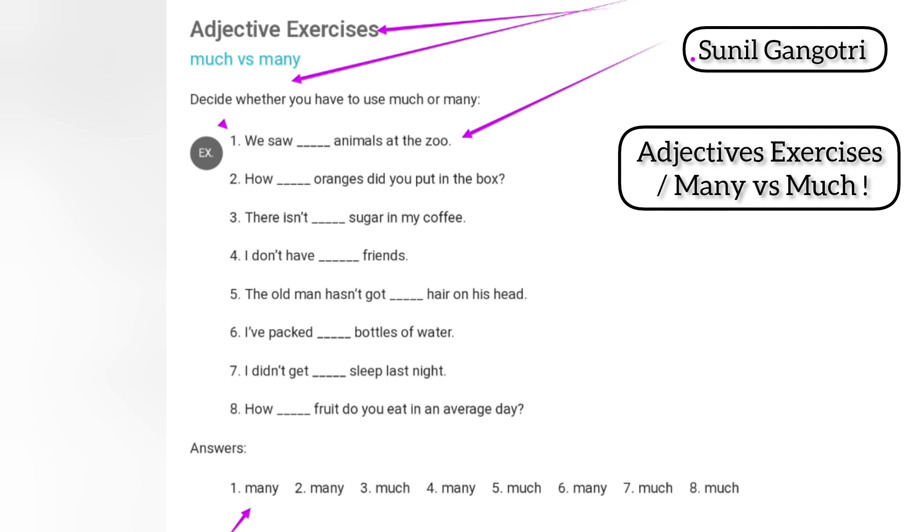Number second: How blank oranges did you put in the box? Many. Answer. Repeat: How many oranges did you put in the box? It's the correct answer, many.